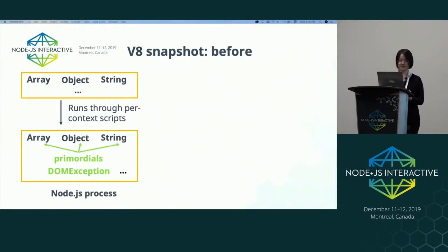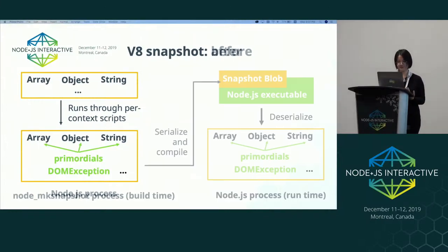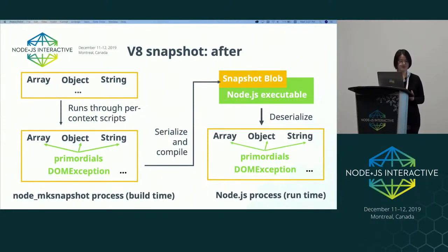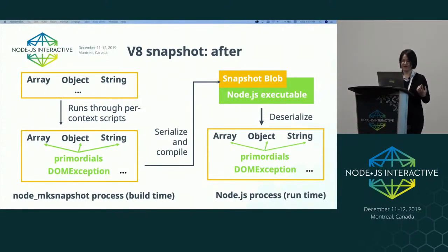Context can be deserialized from the V8 startup snapshot. Note that this is different from the heap snapshots that you use for memory debugging. Before we integrated V8 startup snapshot into Node, we had to run a few per-context scripts in order to initialize these primordials and the DOM exception. Now we run the scripts at build time and serialize the context after initialization has been done. We serialize the context into a blob that gets embedded into the Node executable. Then at runtime, instead of executing these scripts, we directly deserialize the result of the previous execution into one context, which speeds up the bootstrap.